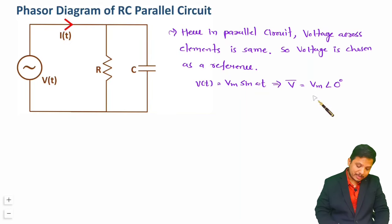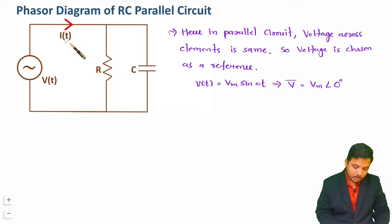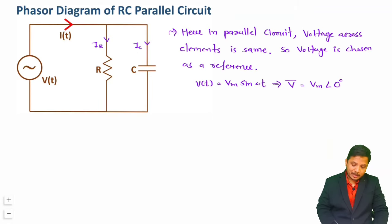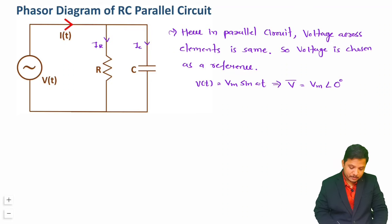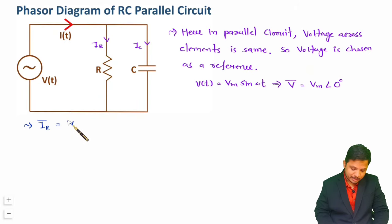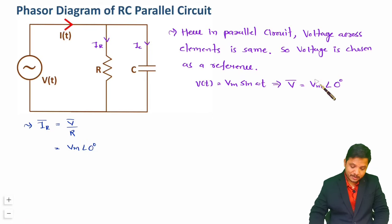To analyze this circuit I need the phasors of the currents. The current is divided into the resistance branch and the capacitance branch. Let the current through resistance be IR and through capacitance be IC. IR in phasor form equals voltage in phasor form divided by resistance R, which is Vm∠0° divided by R.